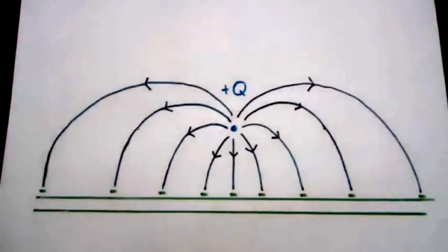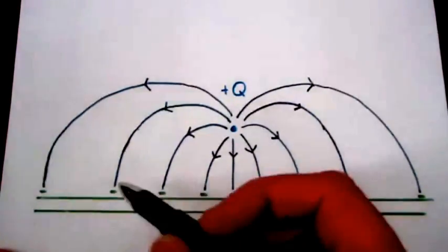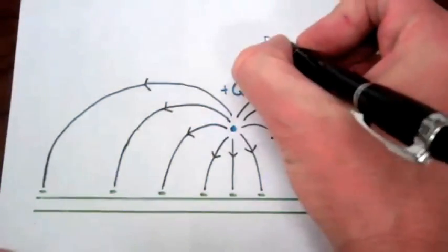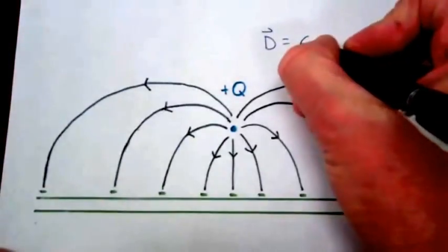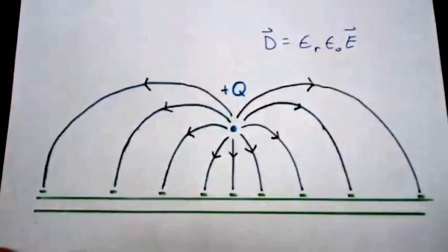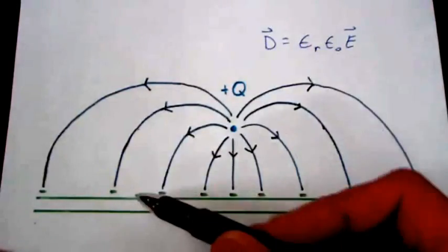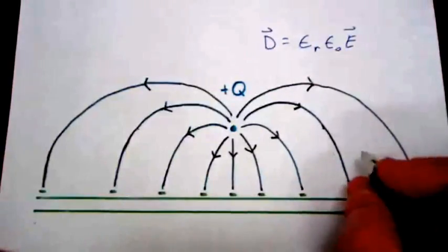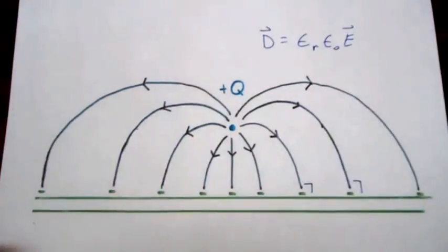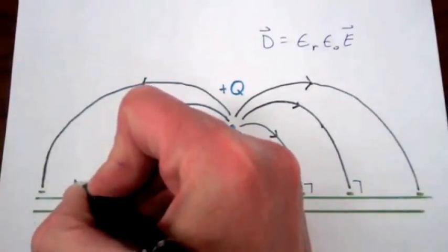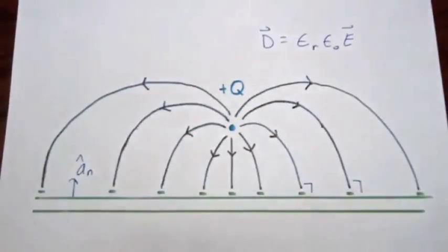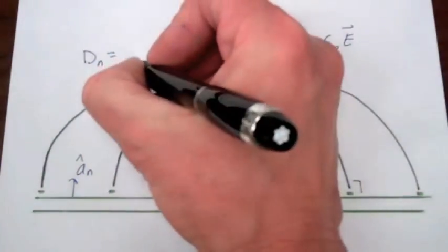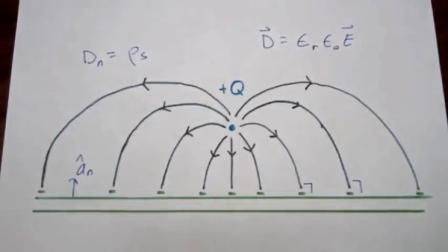Once you have found the electric field intensity using the method of images, you can find the charge density on the surface of the conductor. The electric flux density D is equal to the dielectric constant times the electric field intensity. In a static situation, the electric field intensity — and hence the electric flux density — is everywhere normal to the surface of the conductor. Defining a unit normal outward from the conductor, the electric flux density in that direction equals the surface charge density on the conductor.